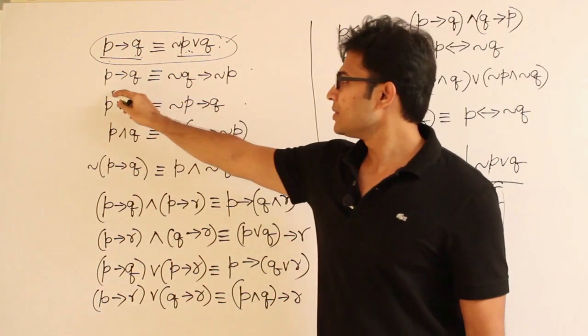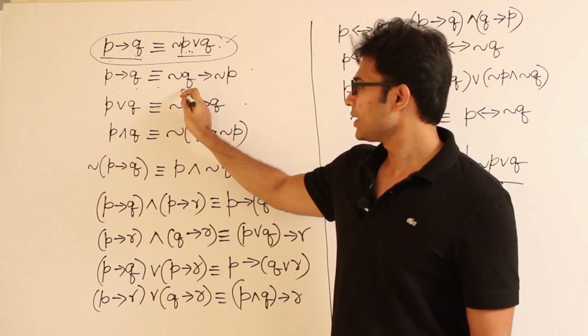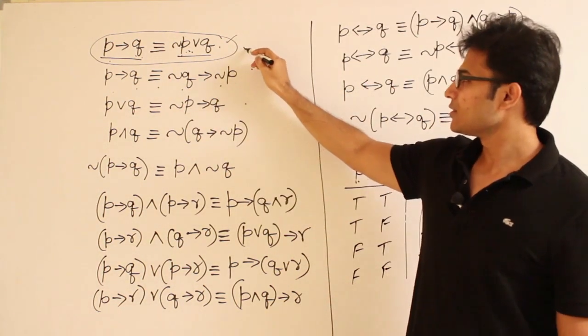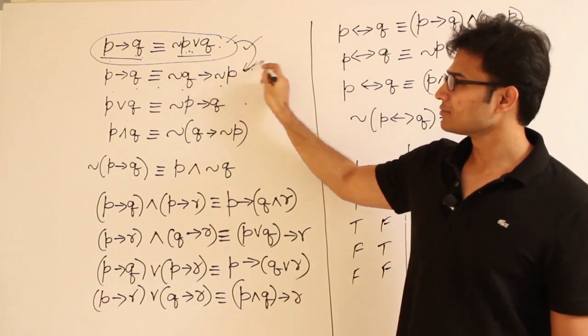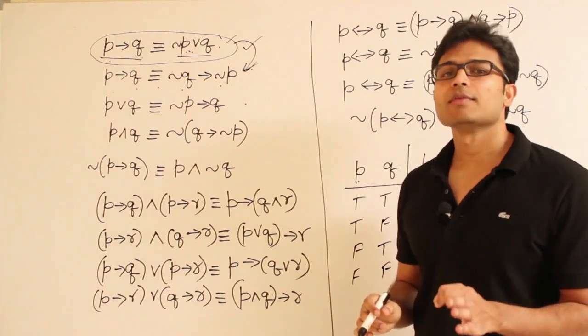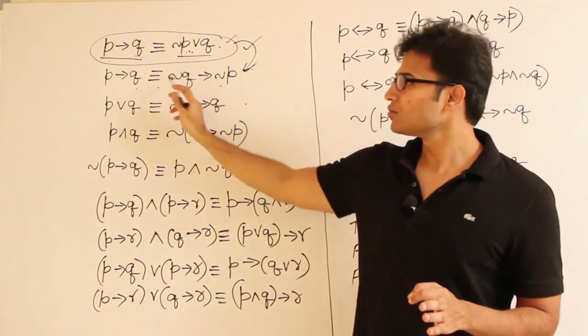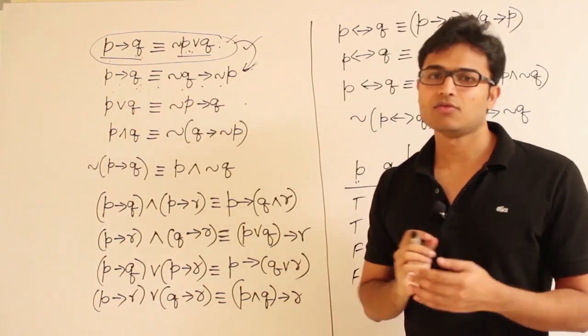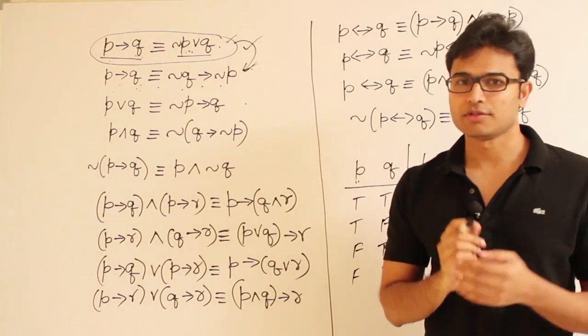So, this one says that P implies Q is equivalent to negation Q implies negation P. And this one, you can see that it follows from this, right? Or, if you don't remember it, just write the truth table of these two and you find it. Since only two variables are involved, the table will contain four rows.